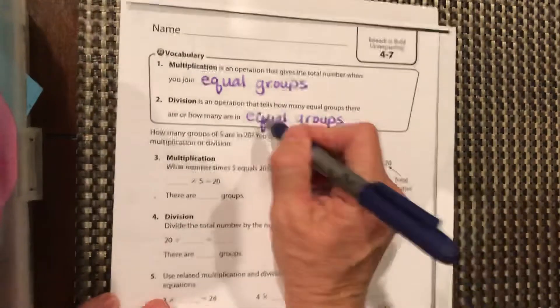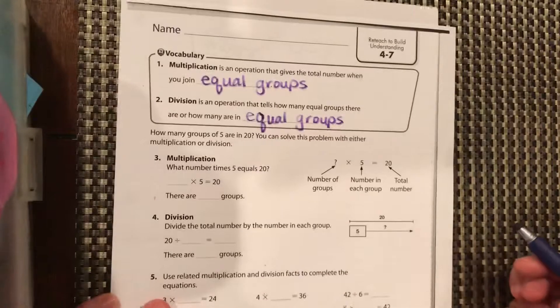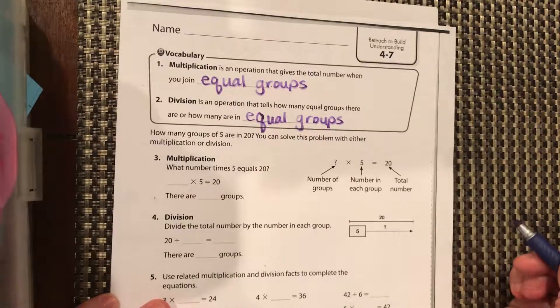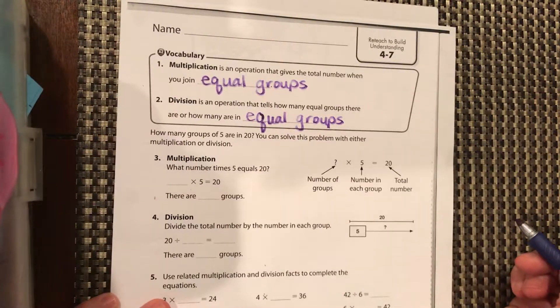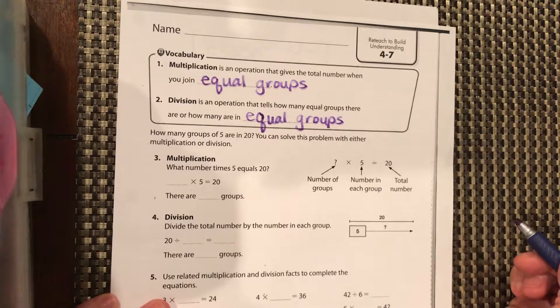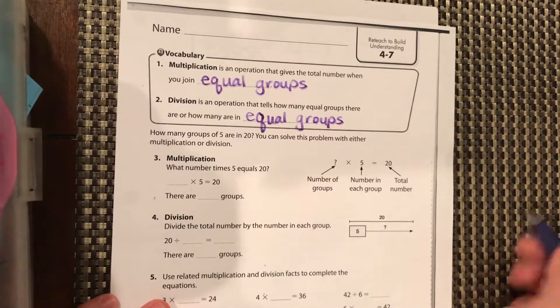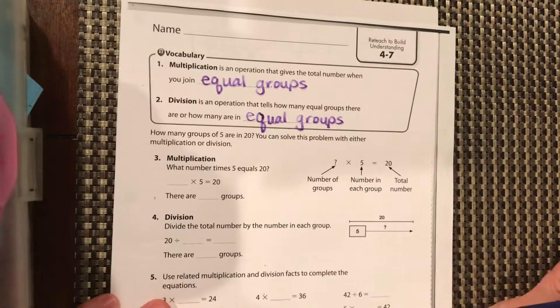So what we can do is use our fact family mountain to help us and then we can decide. It doesn't matter whether you multiply or whether you divide, you're going to get the same answer as long as you're putting the right numbers in the right spots.